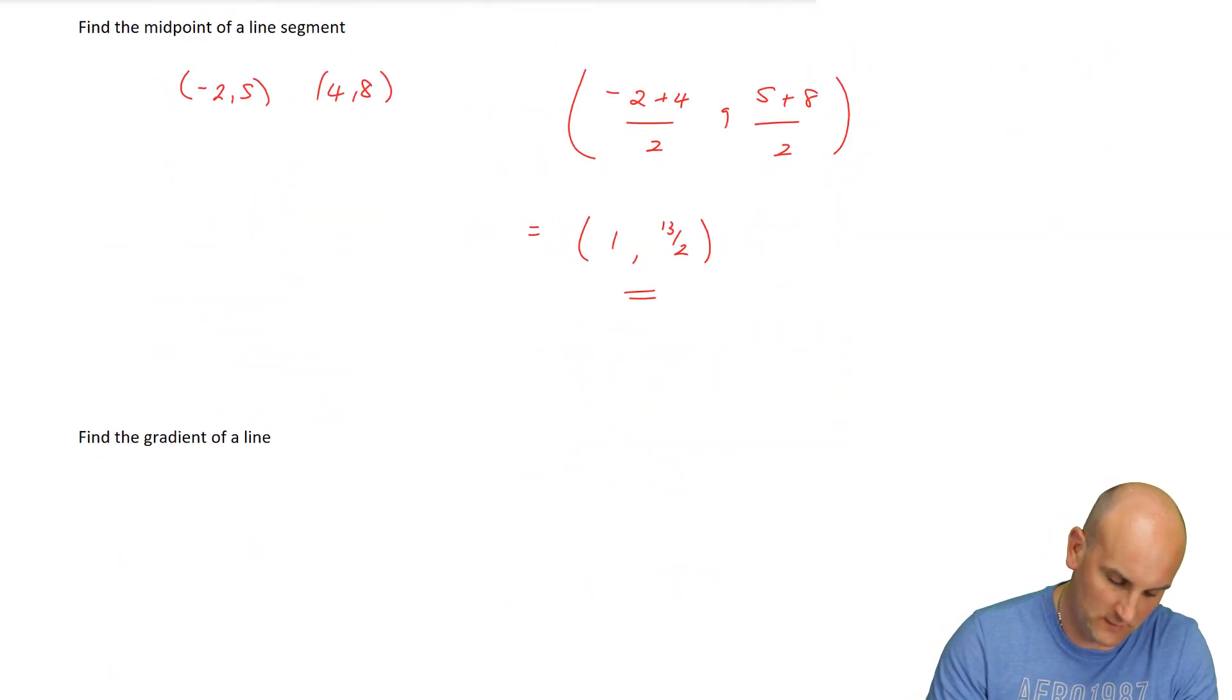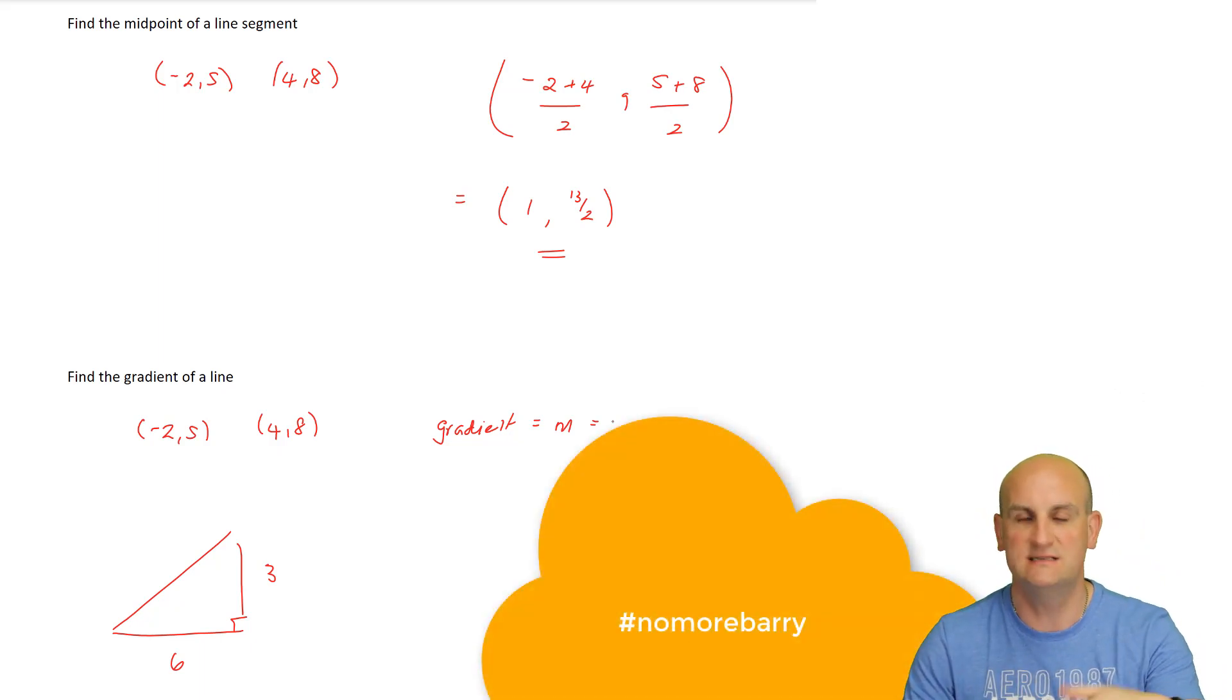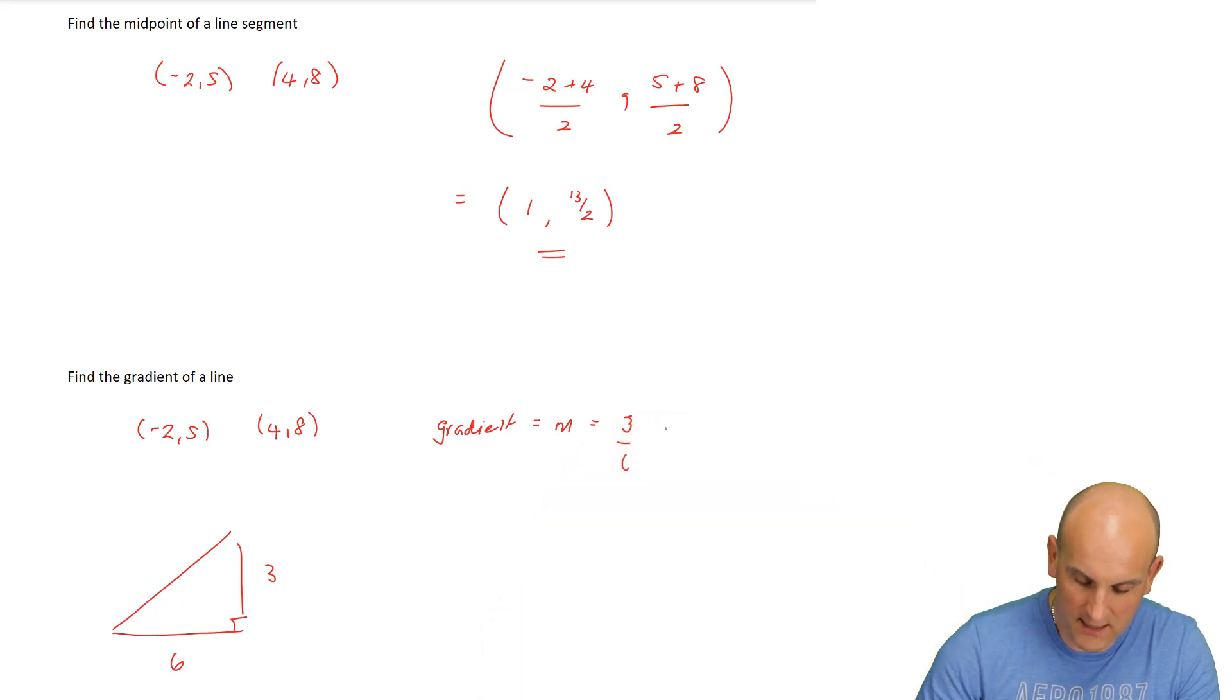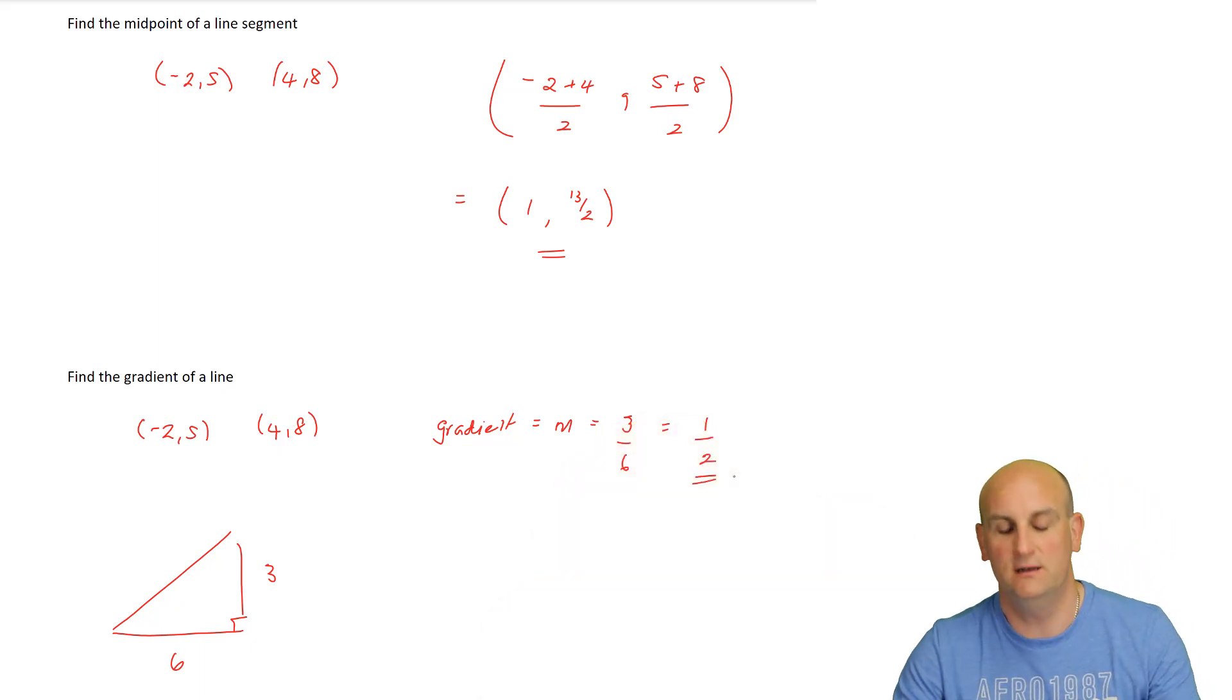Find the gradient of the line. I've got minus 2 comma 5 and 4 comma 8. That initial sketch now is scaffolding the rest of my learning. Gradient is rise over run. So I now know that my gradient, which by the way we write as M, is 3 over 6. You would never leave that. Another huge mistake in methods 3 and 4 is the number of people who do not cancel down or simplify to its lowest terms. If you left that as 3 over 6 in an exam, you would lose your answer mark. 3 on 6 becomes 1 half, and therefore the gradient is a half.